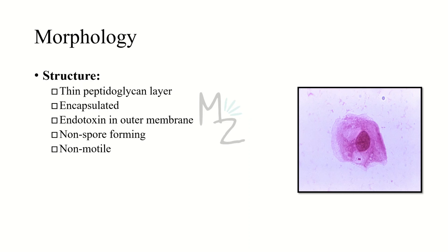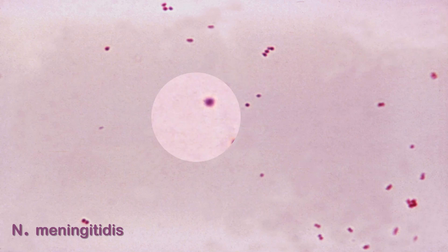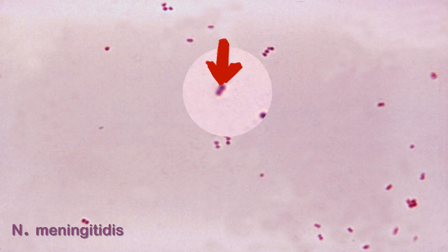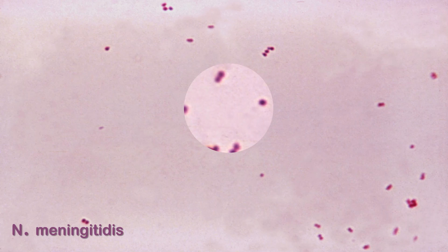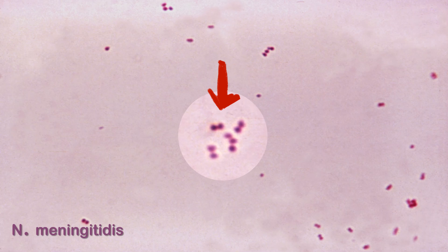Neisseria meningitidis is non-spore-forming and non-motile. As you can see in this picture, this bacterium is a diplococcus. It is pink in color, varies in size from 0.6 to 1 micrometer, and is oval in shape.